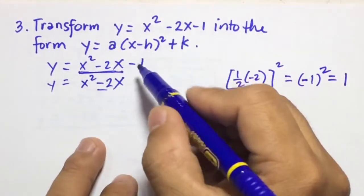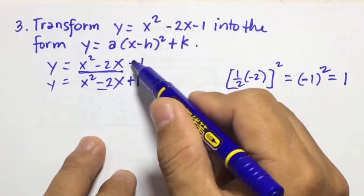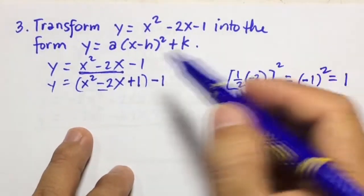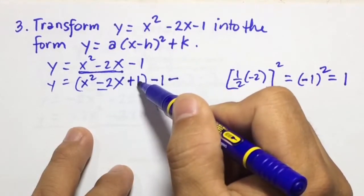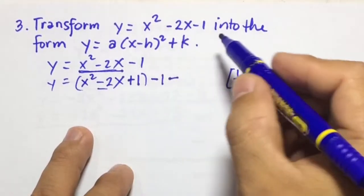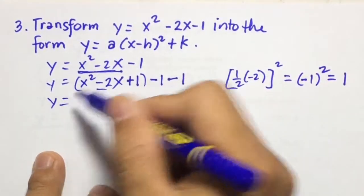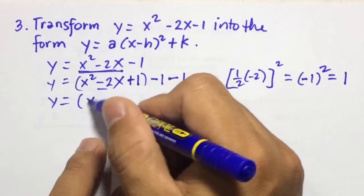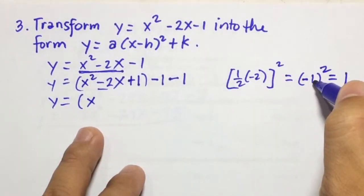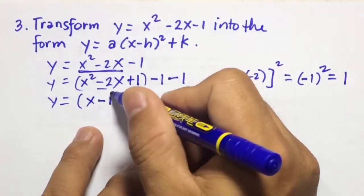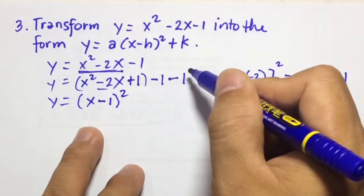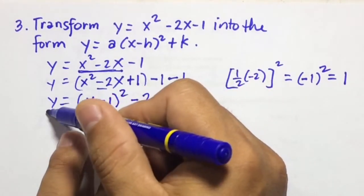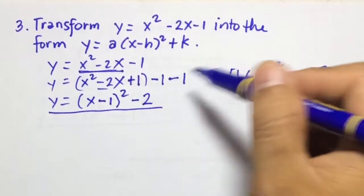So we're going to add 1, then we have minus 1, and we subtract 1 times 1 which is 1, so minus 1. Then expressing this as a square of a binomial, the number we squared was negative 1, so we have x minus 1 squared. Then negative 1 minus 1 is negative 2. So your answer for number 3 is y equals quantity of x minus 1 squared minus 2.